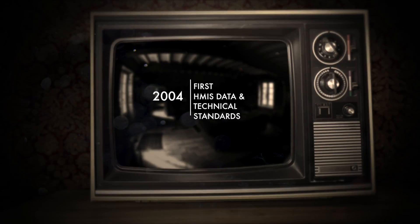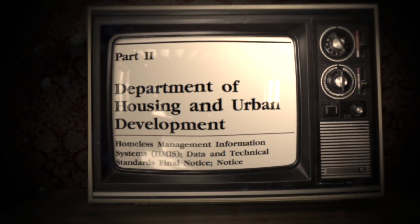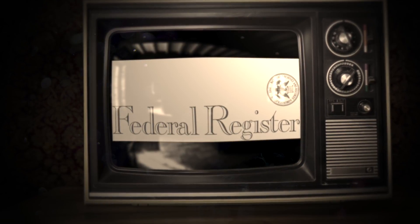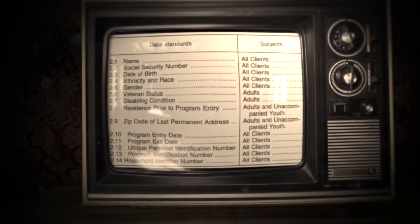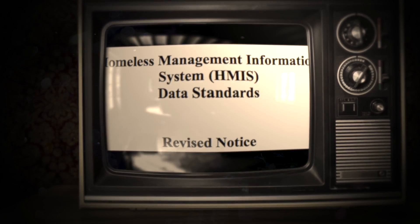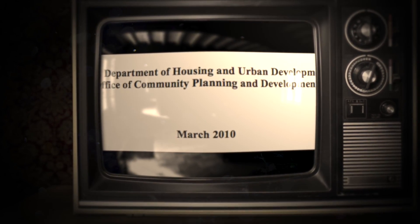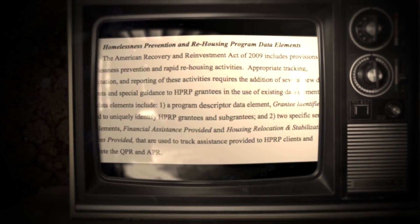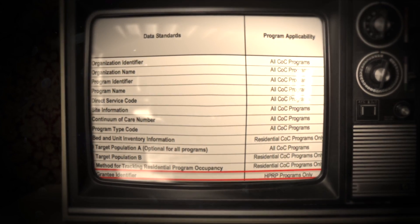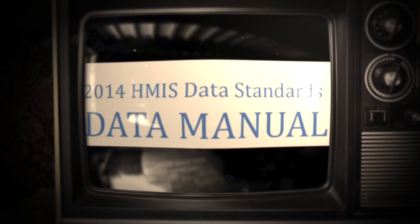The very first HMIS data and technical standards, which define the requirements for data collection, privacy safeguards, and security controls for all local HMIS, were published in the Federal Register by HUD in 2004. In March 2010, HUD updated the data standards revised notice incorporating additional data collection requirements for the Homelessness Prevention and Rapid Rehousing Program, or HPRP, funded under the American Recovery and Reinvestment Act.